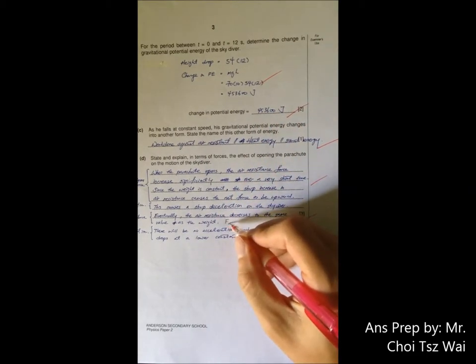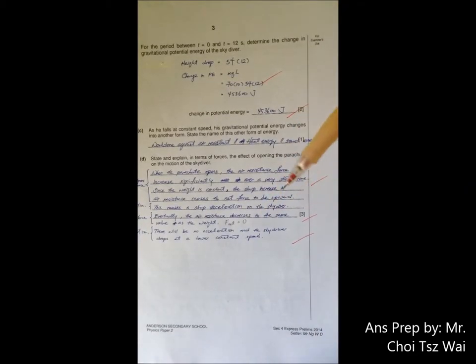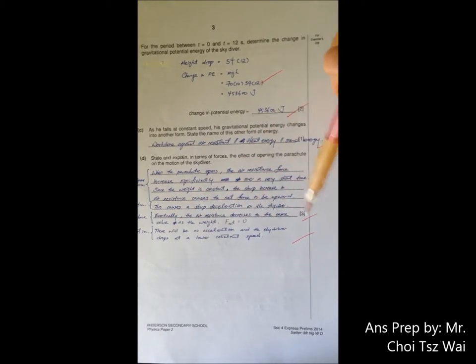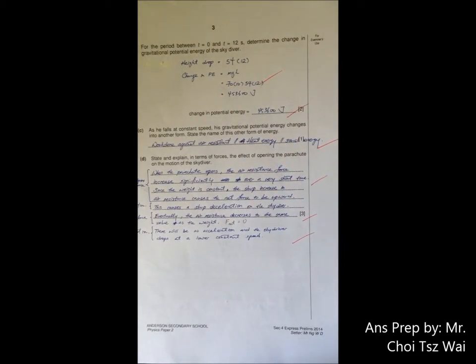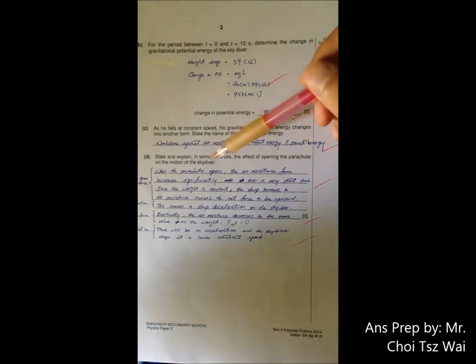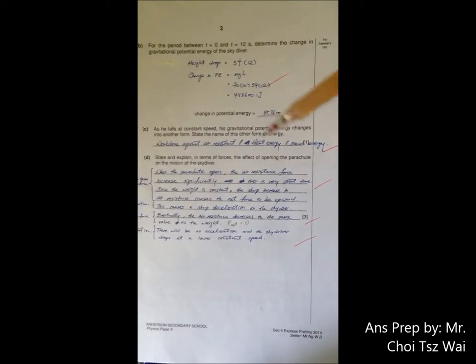Add that. Now, the F net will be zero. That takes care of the force again. Then again, relate it back to the motion. Because the net force is zero, there will be no acceleration and the sky diver actually drops at a lower constant speed. With this structure, you answer the question completely. That's what I mean by you have to read the question carefully and understand what the question is asking for and use the keywords.